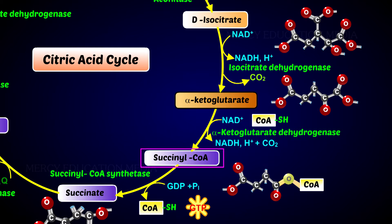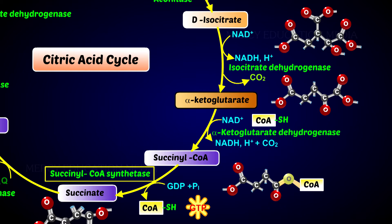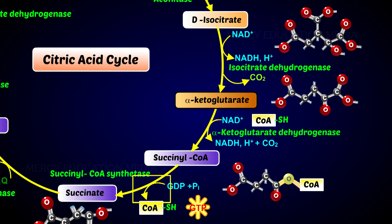The succinyl coenzyme is hydrolyzed to succinic acid in the presence of succinyl coenzyme synthetase. In this reaction, ADP is phosphorylated to ATP.